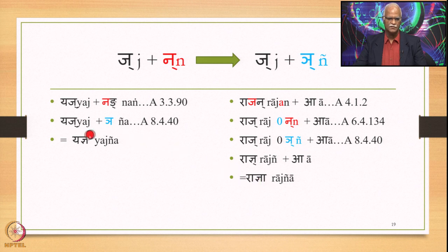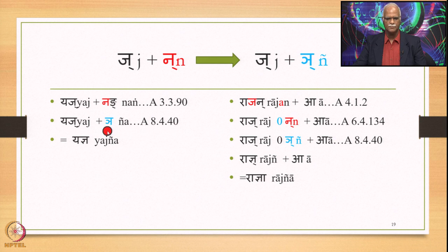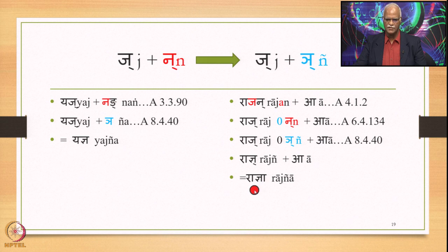This is how we write Jya plus Yen. In this case, this is a Dhatu and Pratyaya, so Samhita is obligatory. Similarly, this is also Pratipadika plus Pratyaya, so Samhita is obligatory — these are within-Pada Sandhis. So we get the form Rajyan. Once again, this is pronounced differently — Rajnya, Rajya, as well as Ragna in different parts of modern India. This is J plus Yen. Always remember: Rajya seems to be the pronunciation.